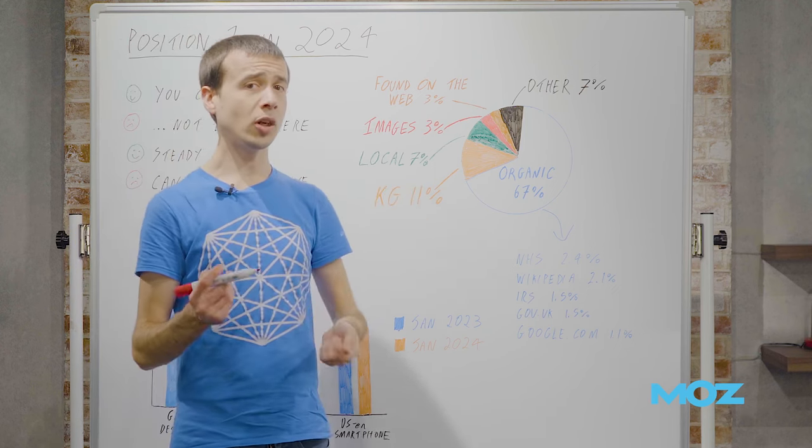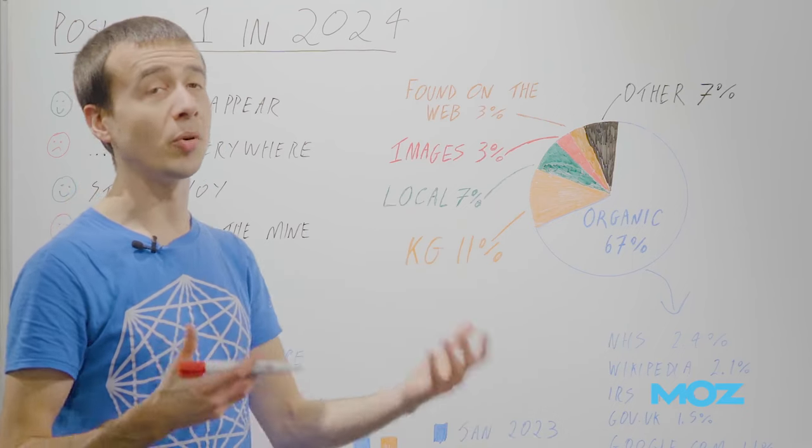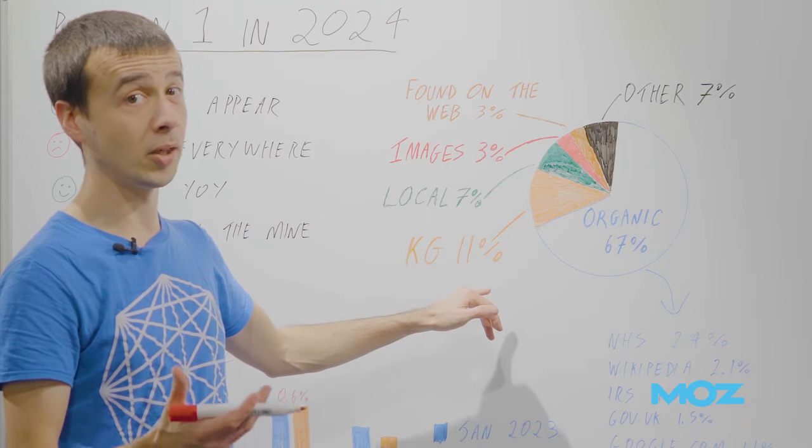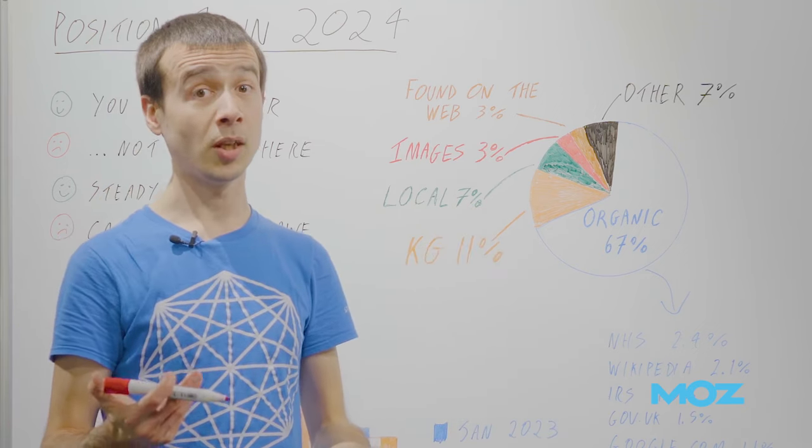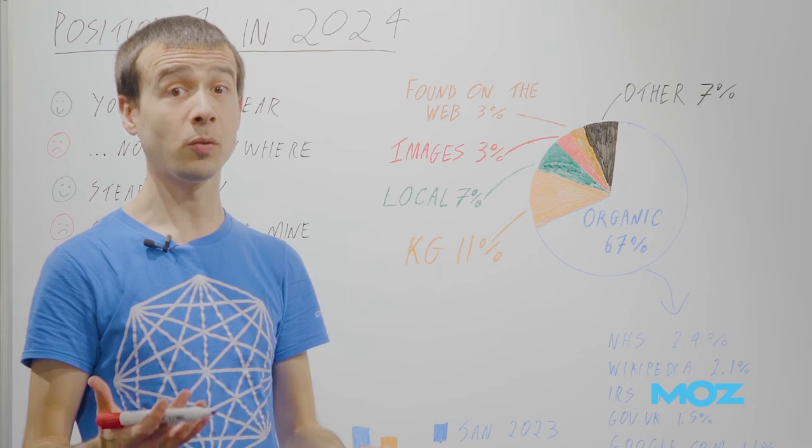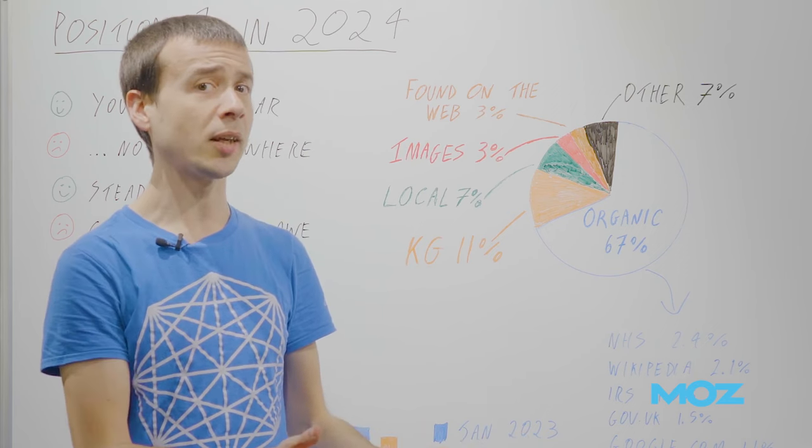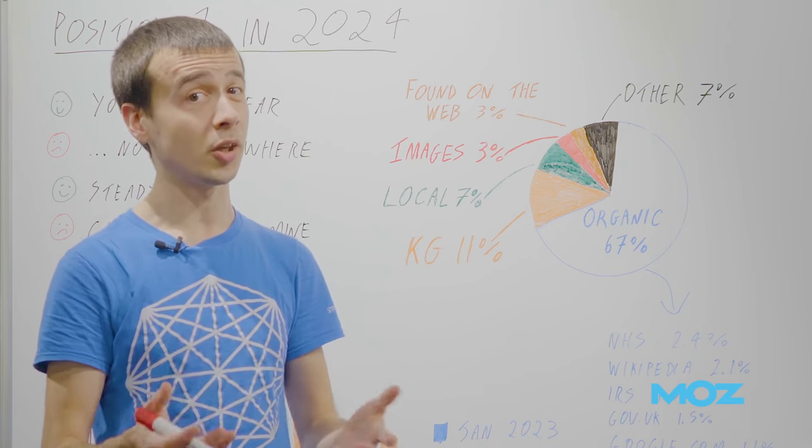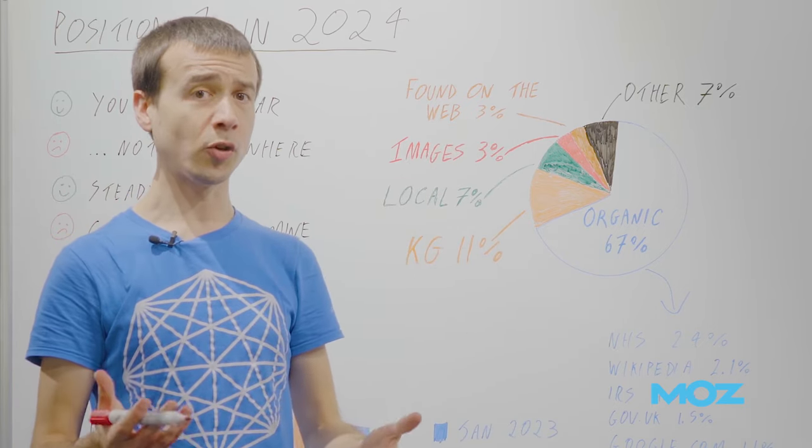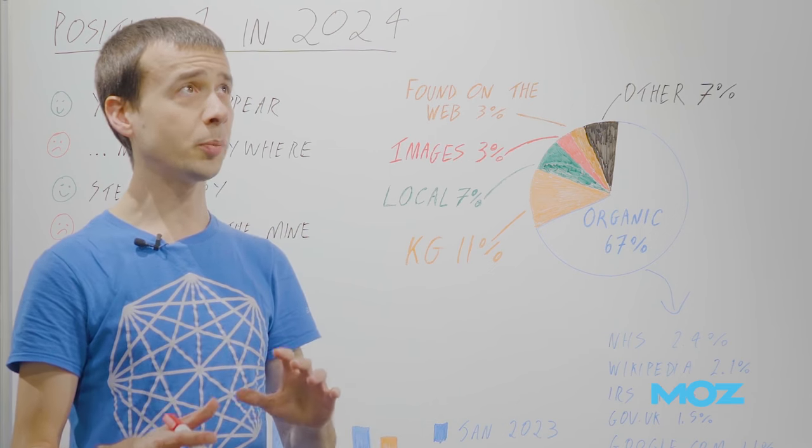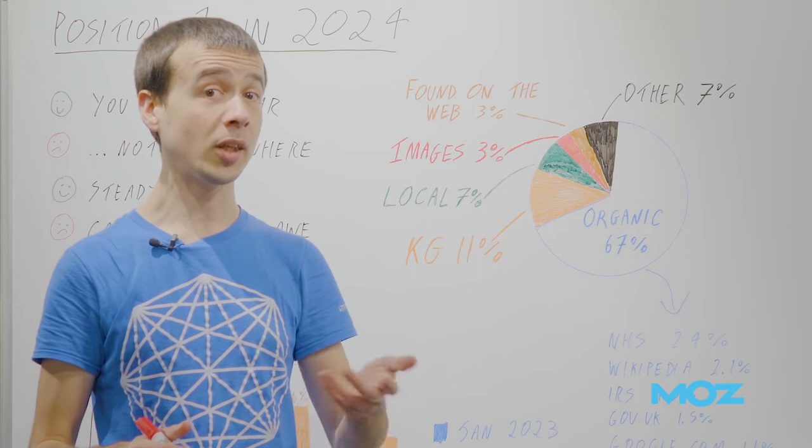When you're not looking at organic, you're looking at a bunch of other features. Knowledge graph, obviously you can't really appear in, maybe for a branded term. Local is seven percent, that's a big chunk. Images, sort of yes, like it is organic image search, although how much click-through rate is very much open to debate. Found on the Web is a new feature that's kind of come from nowhere in the last year. It's a bit of a hybrid between featured snippets and knowledge graph.